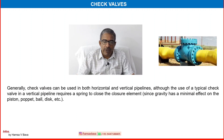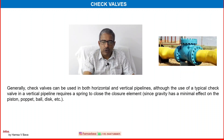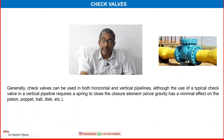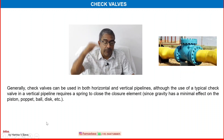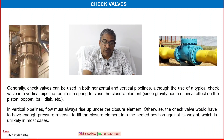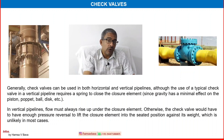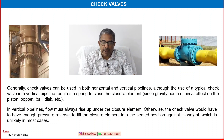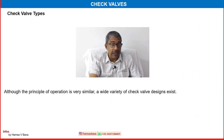Generally, check valves can be used in both horizontal and vertical pipelines, although the use of typical check valves in a vertical pipeline requires a spring to close the closure element since gravity has a minimal effect. In the vertical line we need a spring system — piston type, poppet, or ball type can be used. In a vertical pipeline flow must always rise up under the closure element; otherwise the valve would require enough back pressure to lift the closure element against its weight, which is unlikely. Check valves are mainly used in horizontal systems.